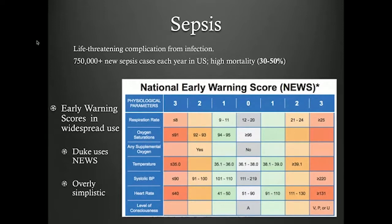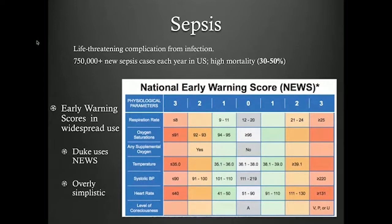There are funny things about this score. For example, if you have a systolic blood pressure of 219 you're totally fine, but if you have 220 you get three points added to your score. The score gave off a lot of false positives — it alerted so many times that people started ignoring it — and it's just not something people have found useful in practice. Coming out of our work on chronic kidney disease, we thought we could definitely make something that performs better.